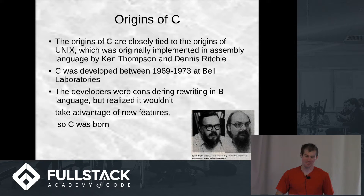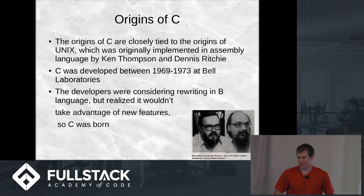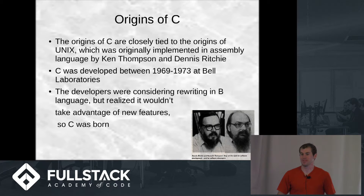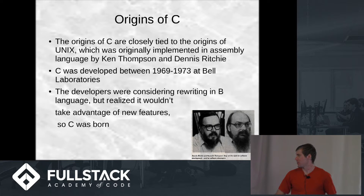C was actually first developed for Unix in order to help create the whole Unix operating system, which we all use, so it's close to home. And Unix was developed by Ken Thompson and Dennis Ritchie — that's their picture right there, those two guys.